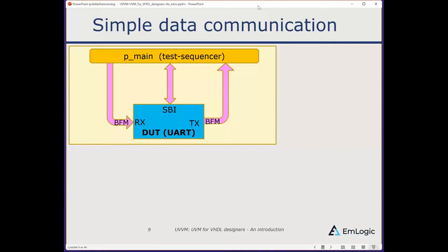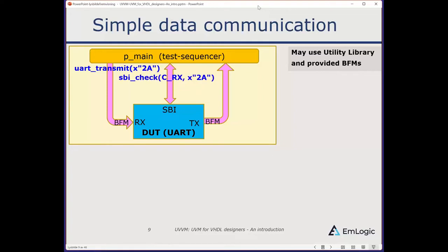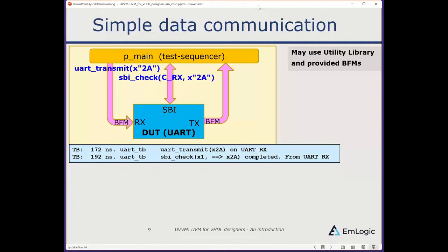Moving up one step to simple data communication — consider a UART with a simple bus interface, an Rx interface, and a Tx interface. Using only a test sequencer, you can use the Utility Library and provided BFMs. I can use a command called UART Transmit to put data into the Rx of the UART device under test. Later I can read it out from the SBI bus interface and do an SBI Check, verifying that from register Rx I read the value 0x2A. The transcript confirms both the UART Transmit and SBI Check are OK.